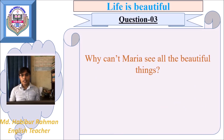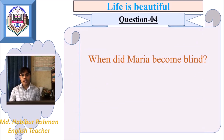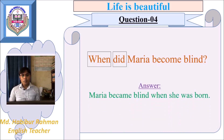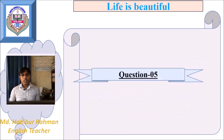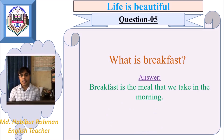Third question: why can't Maria see all the beautiful things? 'Why' is a WH word used to ask for a reason. The answer: Maria can't see all the beautiful things because she is visually impaired. Fourth question: when did Maria become blind? 'When' is used to ask about time, and there is the auxiliary verb 'did,' so this question is in past form and we answer in past tense. Answer: Maria became blind when she was born. Question number five: what is breakfast? The answer to this question is not in the passage, so we think it out — breakfast is the meal that we take in the morning.